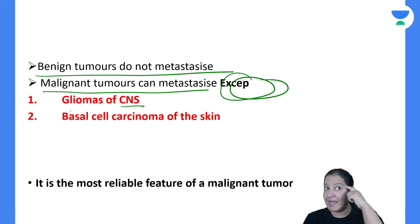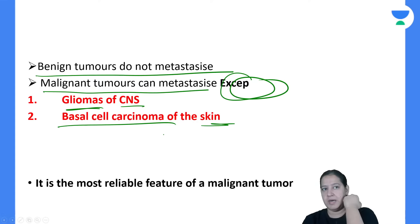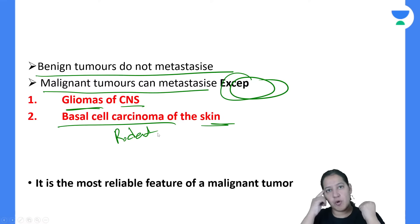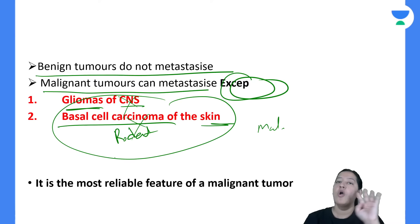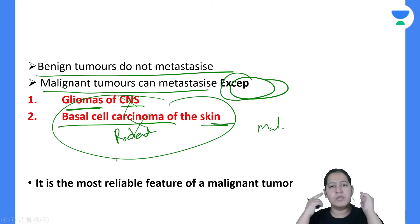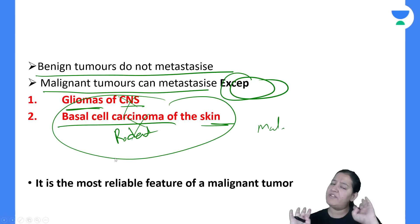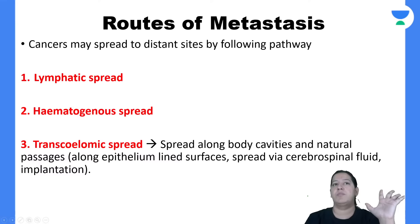For hematogenous spread, tumors prefer veins over arteries because veins have thinner walls, offering less resistance. Via veins, the tumor cells go into the superior or inferior vena cava, then to the right auricle, right ventricle, and then to the lungs — making the lung the most commonly involved organ via hematogenous (caval blood flow) route.